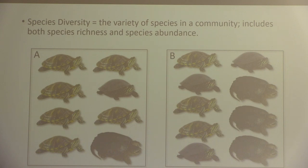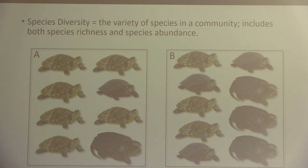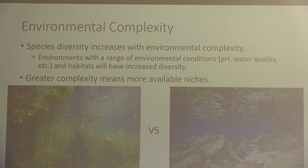If we want to keep our communities nice and diverse — which is a really good quality to have in ecosystems — the best way is to try to prevent aquatic invasive species, or any invasive species. There are terrestrial invasive species too, and the plant people would be upset if I didn't mention that. One of the ways we talk about environmental complexity is how it affects diversity, since environments have both visible and invisible characteristics.